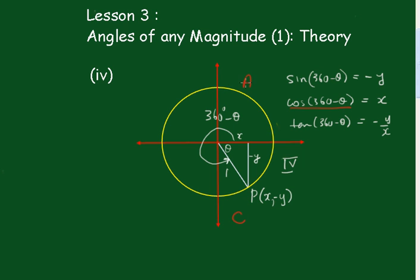So: all positive in the first quadrant, sine was positive in the second, tan was positive in the third, and cos is positive in the fourth. We can use the notation A, S, T, C — the way to remember it is 'All Stations To Central.' Some people remember it the other way as C, A, S, T, but I prefer A, S, T, C. After this I'll give you three examples, and then there will be exercises to follow in the other videos.